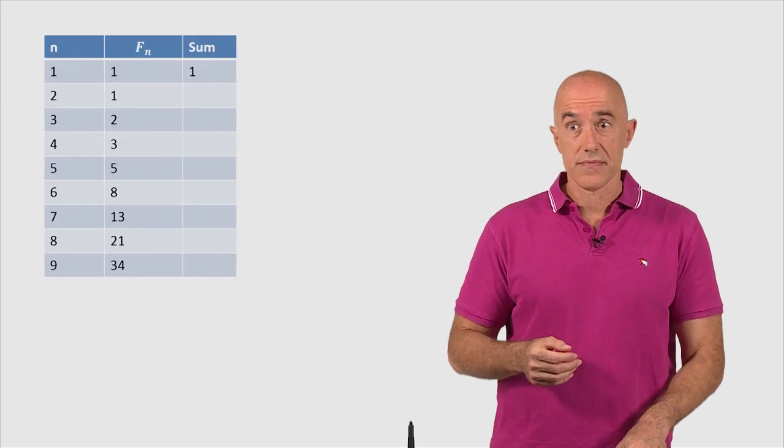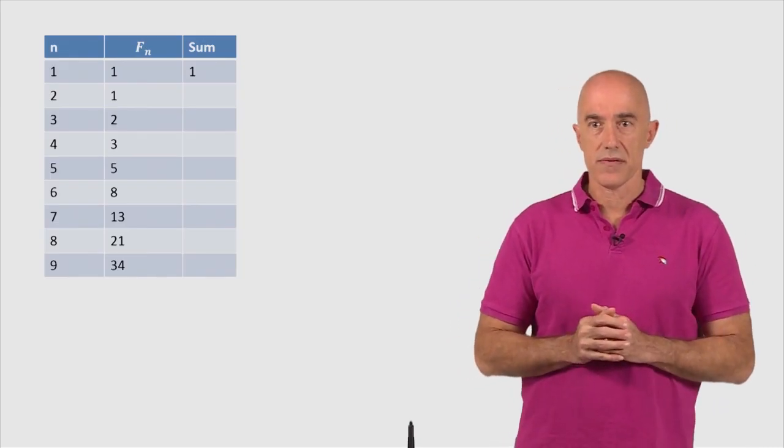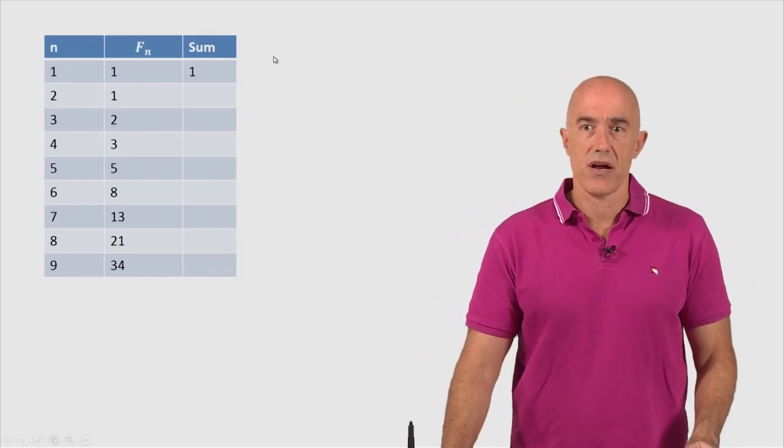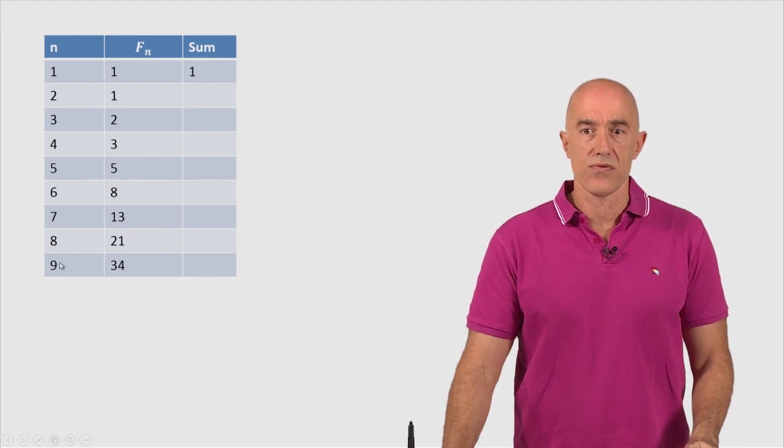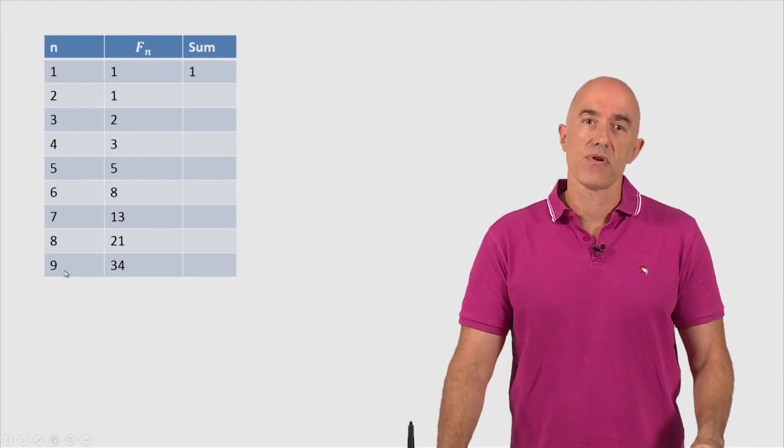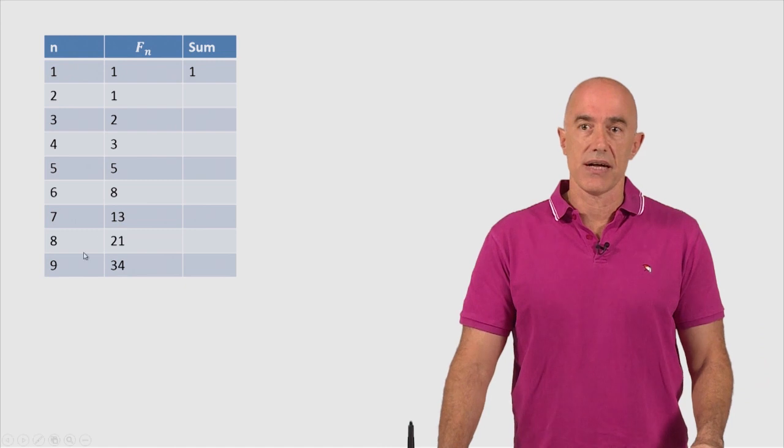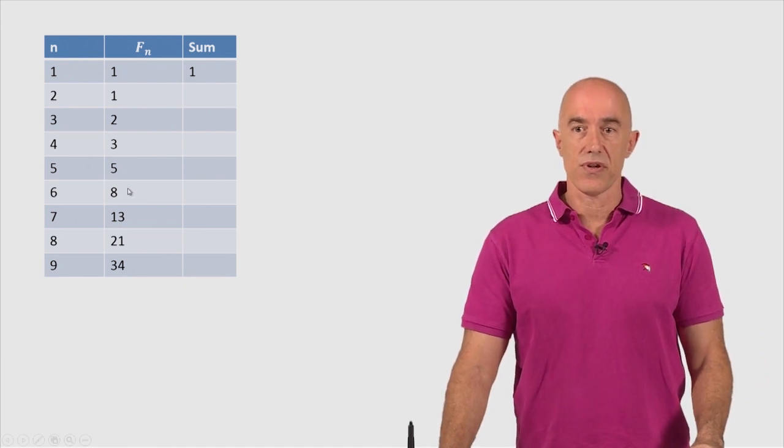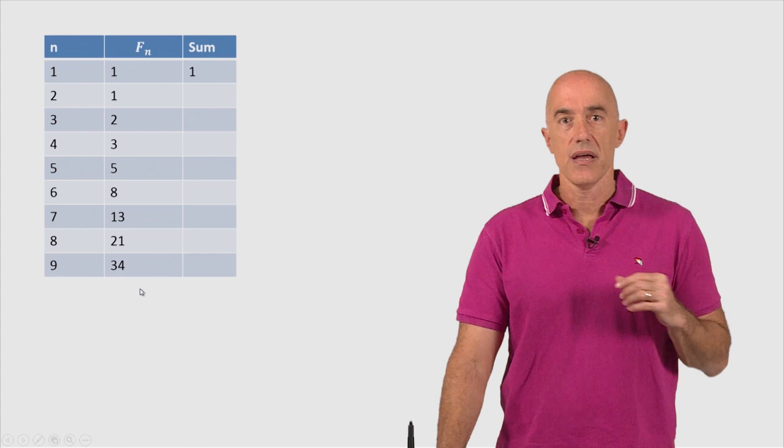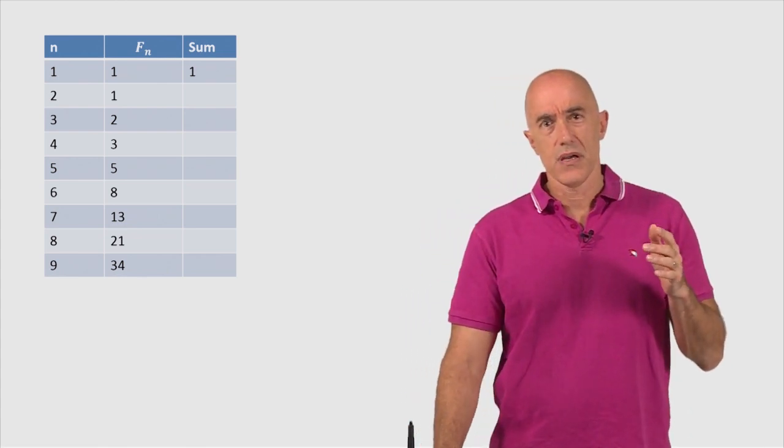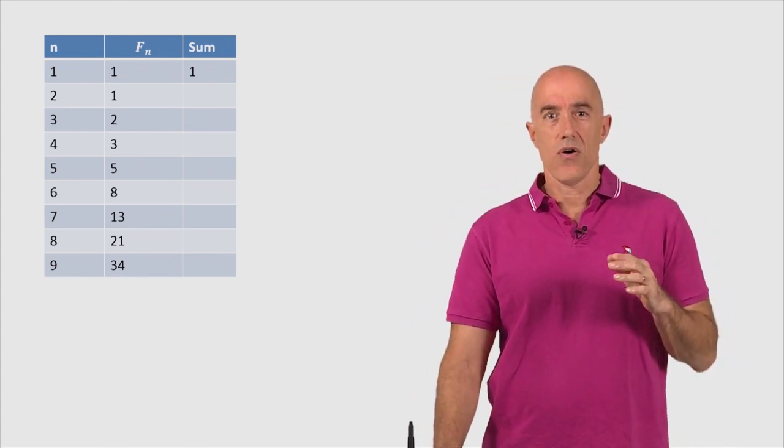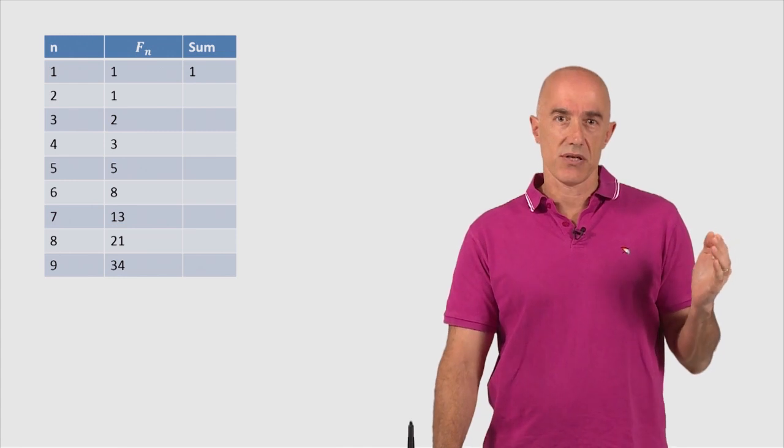So to discover the formula, we write a table. So we have here the n equals 1 through 9. And then we write down the first nine Fibonacci numbers, 1, 1, 2, 3, 5, 8, 13, etc. And then in the third column, we're going to put the sum over the first n Fibonacci numbers.